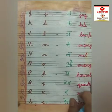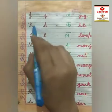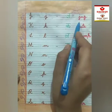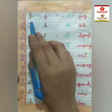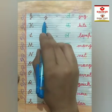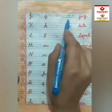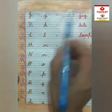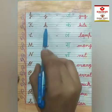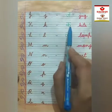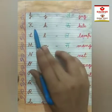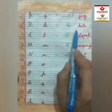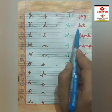J says J — jug. J says J — jug. K says K — kite. K says K — kite.